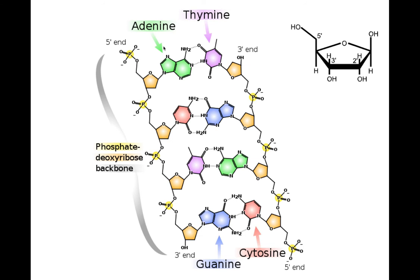...thymine, guanine, or cytosine. For example, an adenine is linked to the ribose here, here is a cytosine, here is a thymine. In double-stranded DNA, there are pairing rules: adenine only pairs with thymine, and guanine only pairs with cytosine — AT and GC. The base pairing is in the form of hydrogen bonds formed between specific atoms of each base.